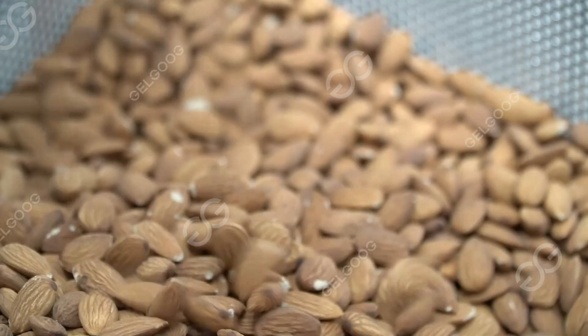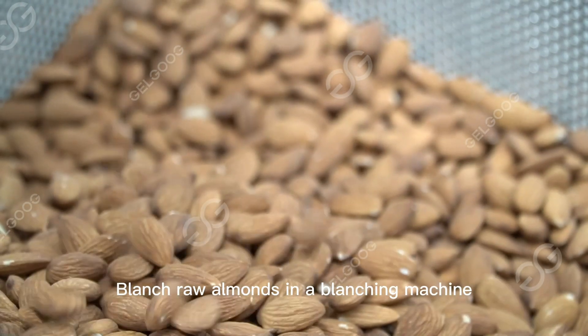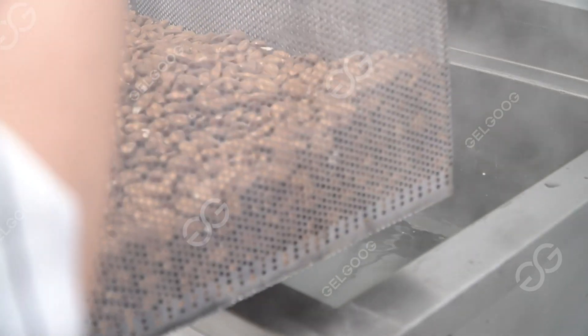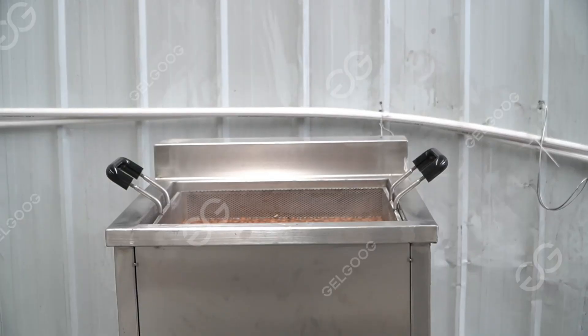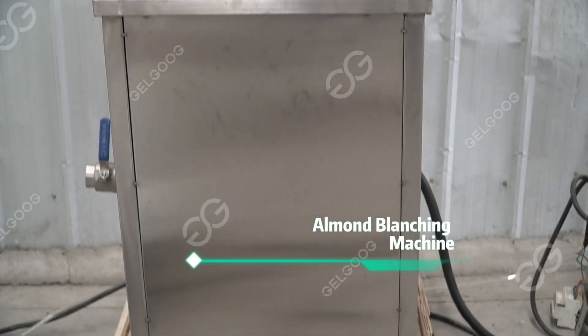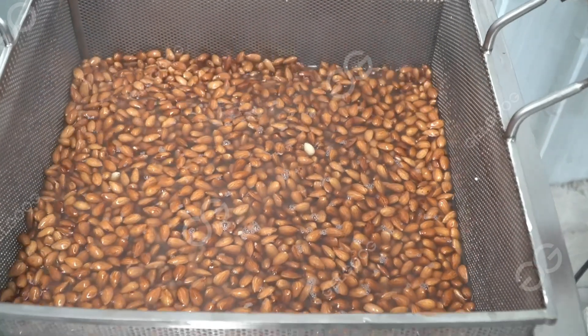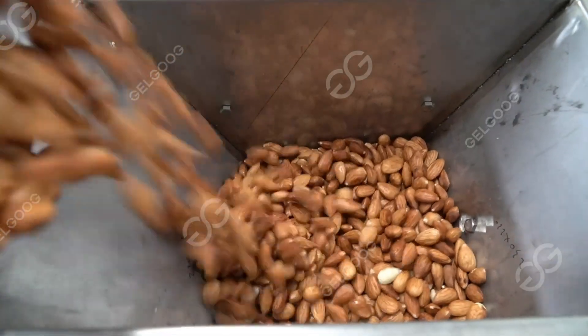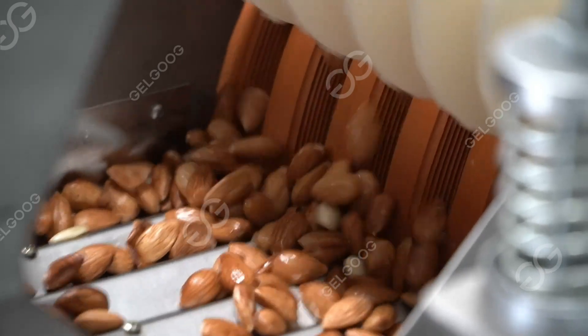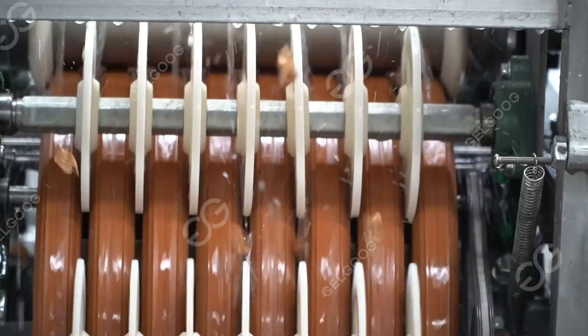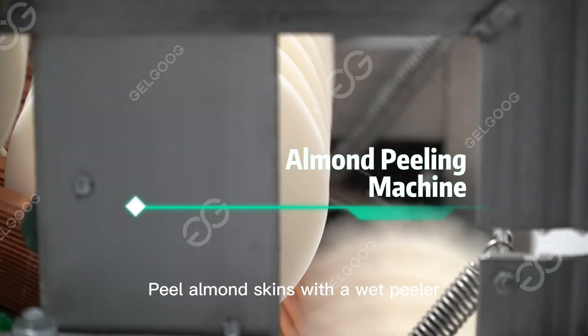Almond blanching machine: Blanch raw almonds in a blanching machine. The water temperature is about 90 degrees Celsius and scald for 3 to 5 minutes. Peel almond skins with a wet peeler.